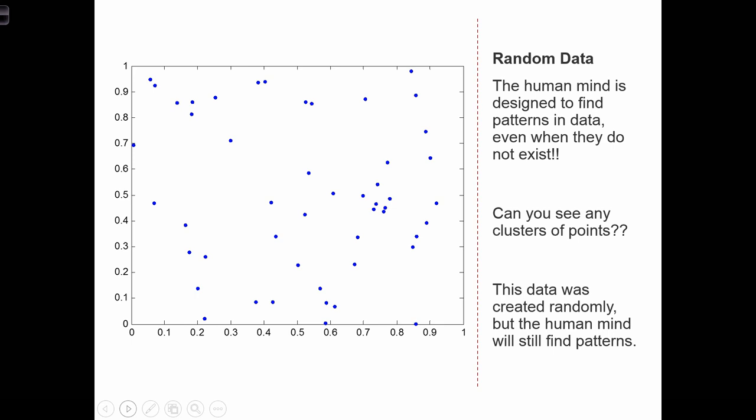What I want you to do is take a look at this point distribution. The human mind is actually designed to find patterns in point data, even when those patterns don't exist. I created this data using a random number generator, so these abide by the rules of complete spatial randomness.